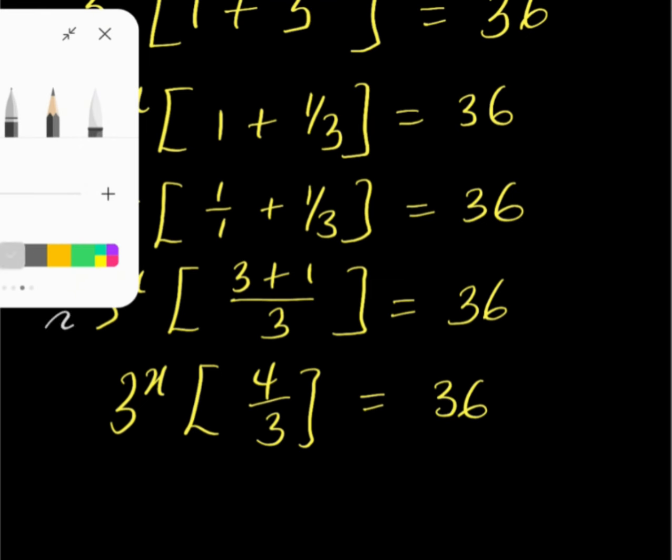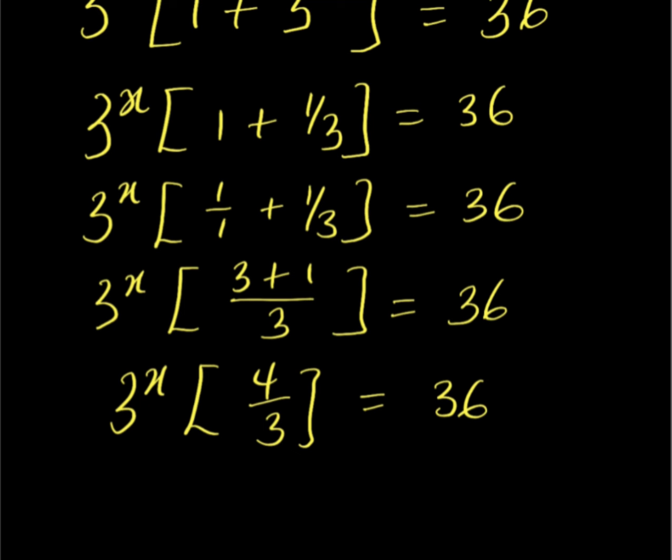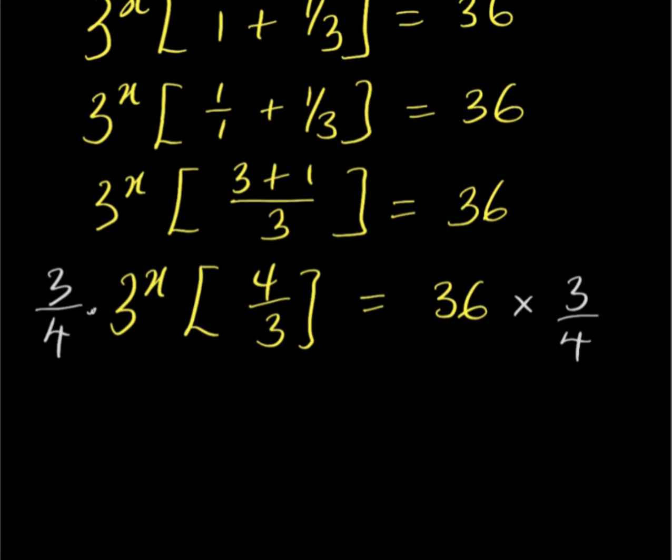Now, to get rid of the 4 over 3 on the left side, I multiply both sides by 3 over 4, which is the reciprocal of 4 over 3, so they cancel out. Four cancels 4, 3 cancels 3, and I'm left with 3 to the power of x equal to—36 divided by 4 is 9, and 9 times 3 is 27.